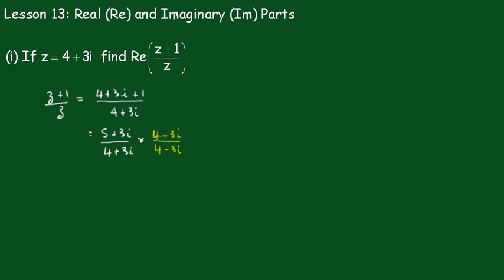We're going to multiply these top parts together. So it's 5 plus 3i times 4 minus 3i.